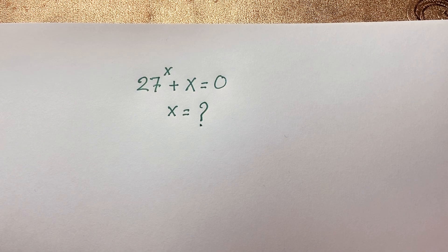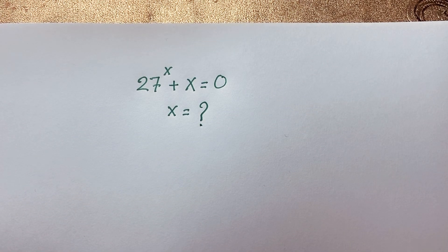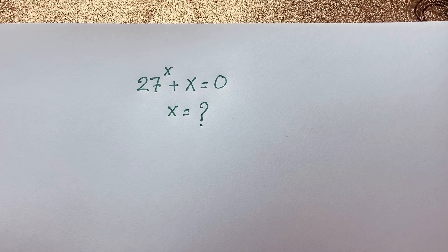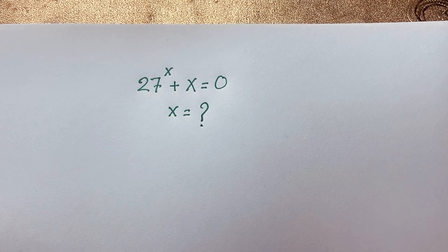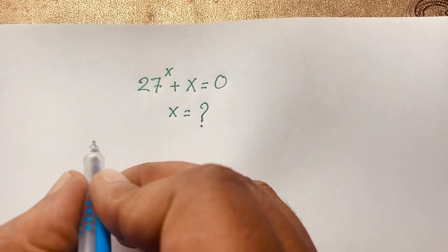Hello everyone. In this video we have solved a nice math olympiad question. The question is 27^x + x = 0. We will find out the value of x in this exponential expression — how to find the value of x in this math olympiad question. So let's start.